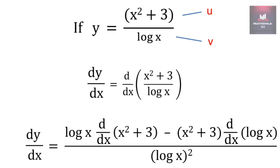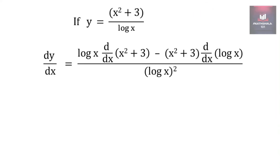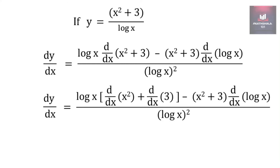So it will become log(x) times the derivative of (x square plus 3), minus (x square plus 3) times the derivative of log(x), all upon log(x) the whole square. Since x square plus 3 is separated by addition, we can take the derivative of individual terms. So this becomes log(x) times the quantity [derivative of x square plus derivative of 3], minus (x square plus 3) times the derivative of log(x), all upon log(x) whole square.